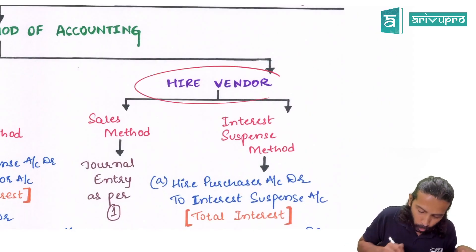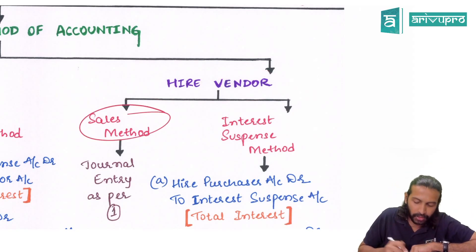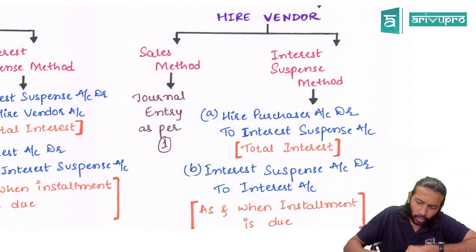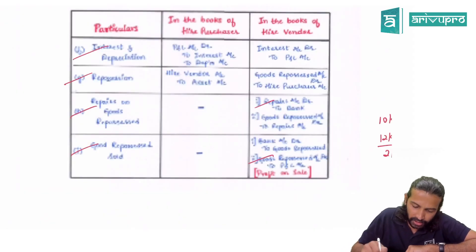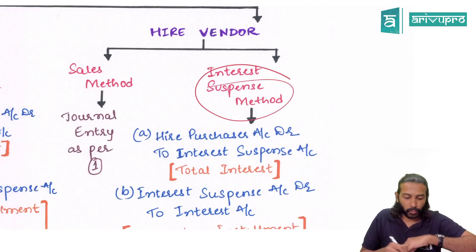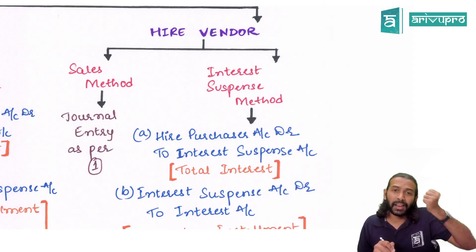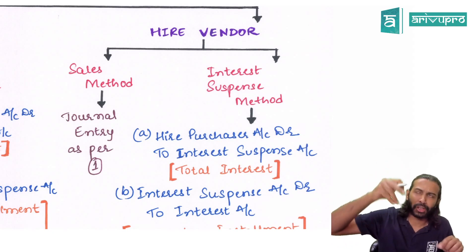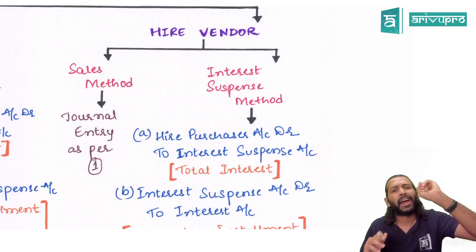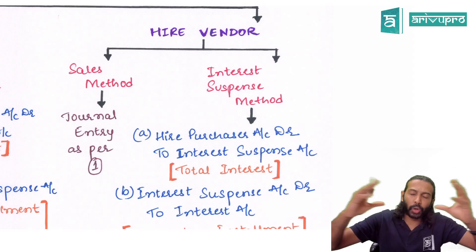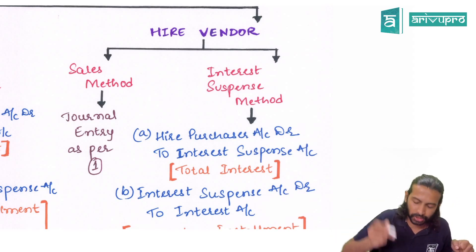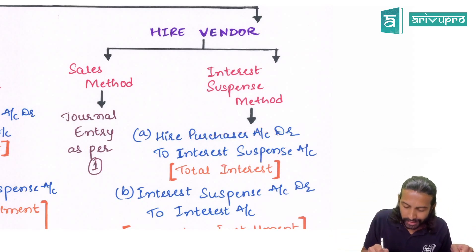In the books of the hire vendor, there are also two types of accounting: the Sales Method and the Interest Suspense Method. The Sales Method entries are the same as what we just covered — journal entry as per the earlier set. If the hire vendor follows Interest Suspense Method, he will receive interest from the hire purchaser. Total interest receivable is calculated and parked in Interest Suspense Account: Higher Purchaser Account debit to Interest Suspense Account — for total interest receivable.